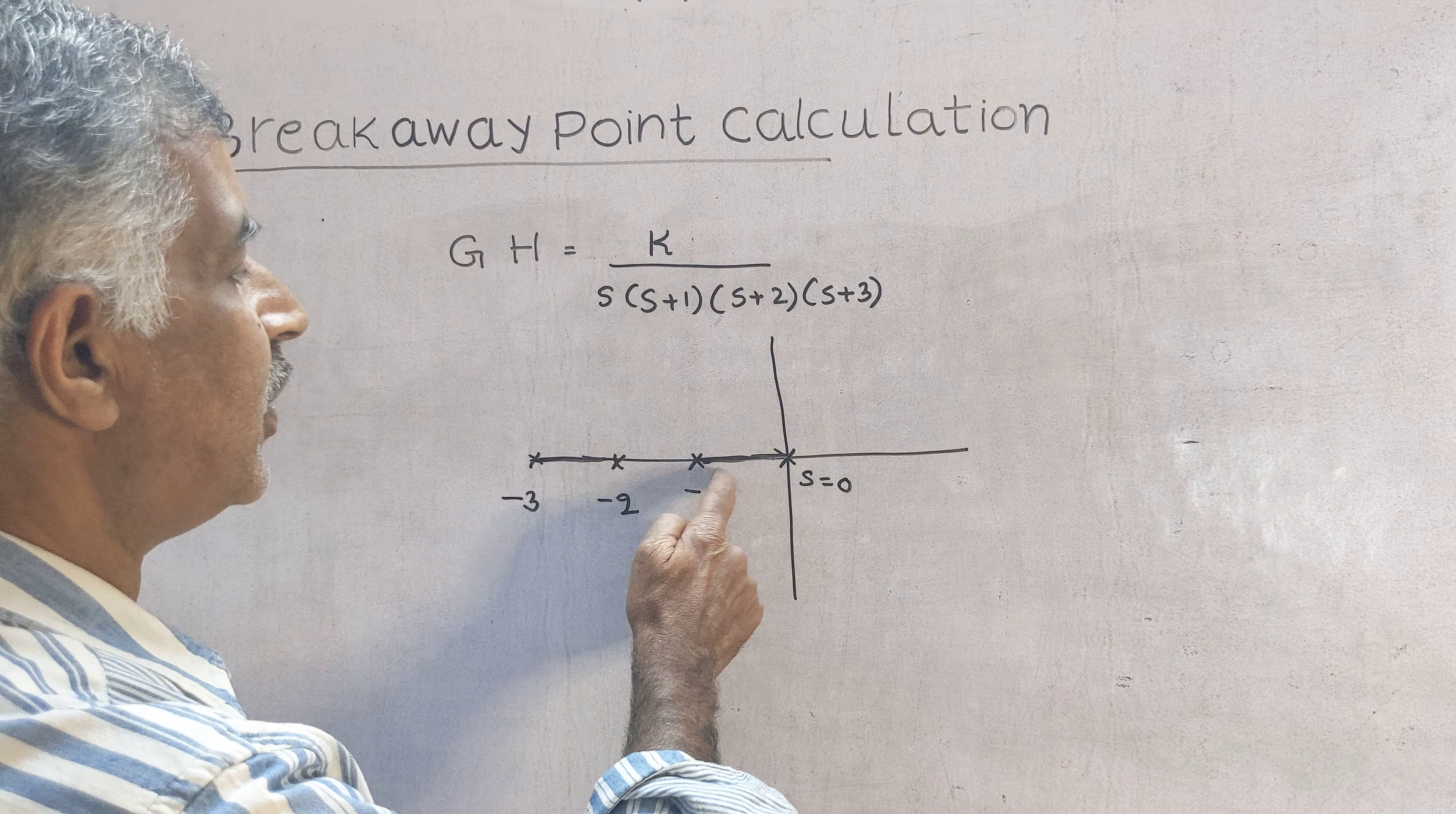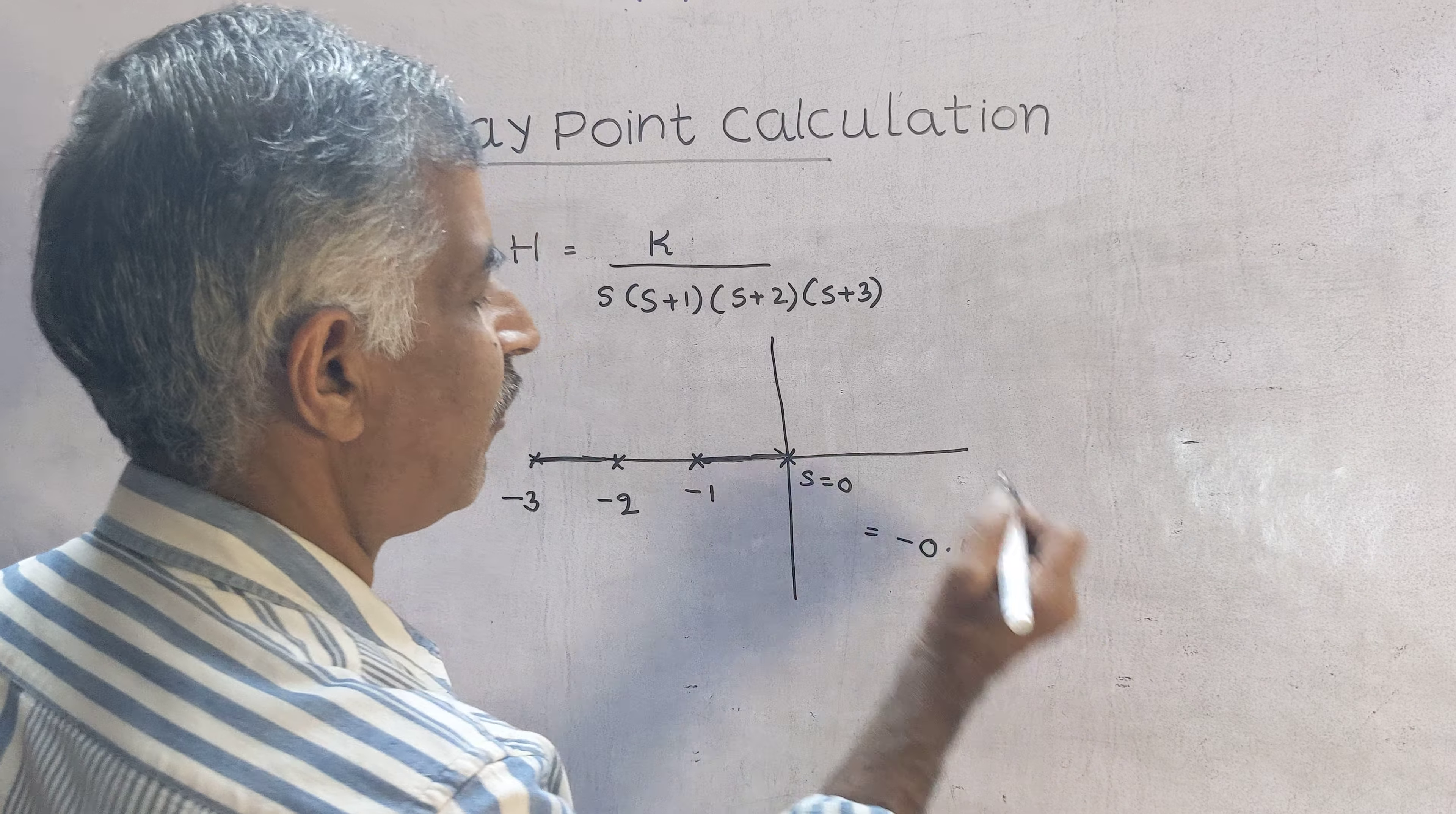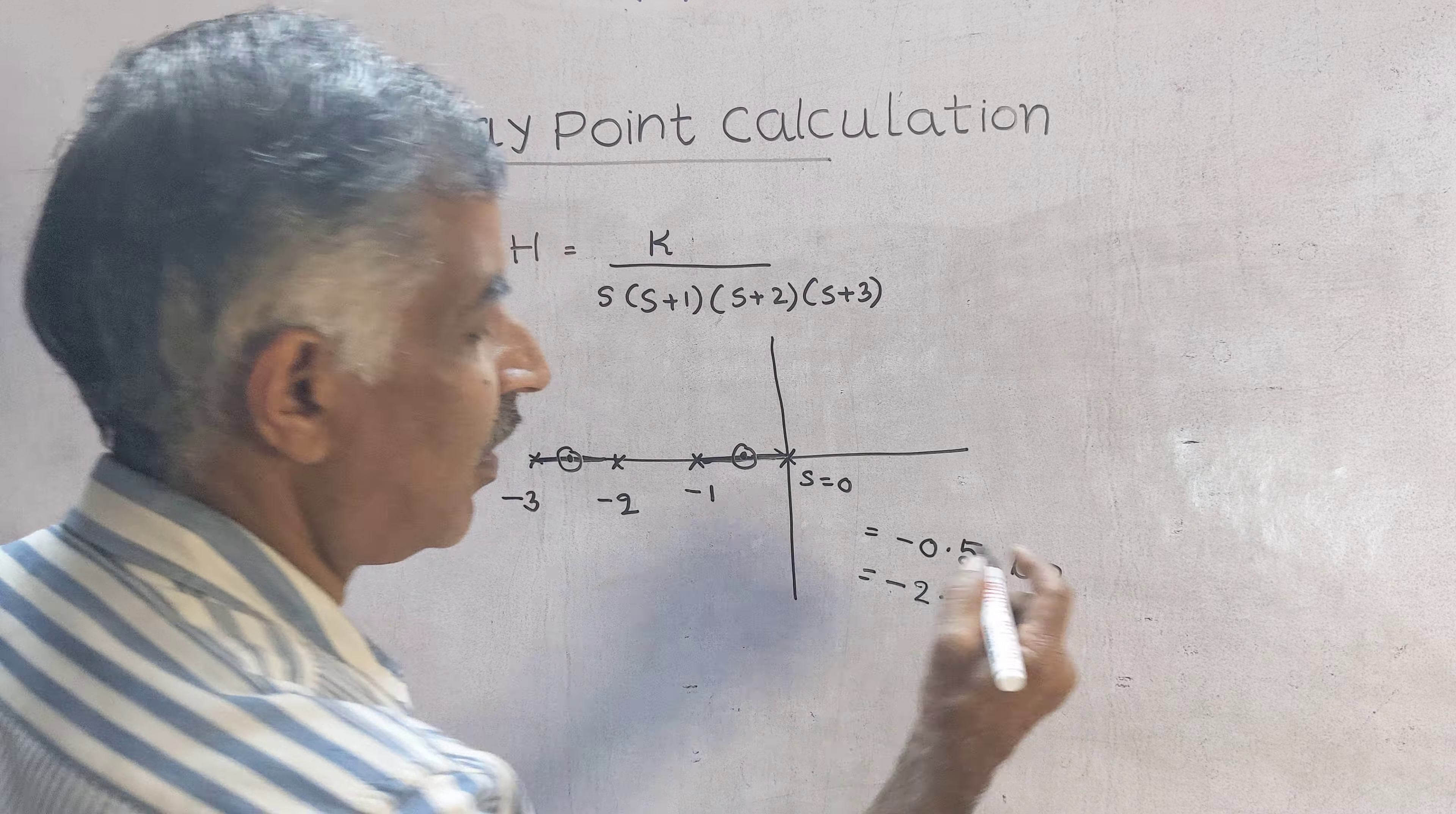Therefore between these two poles you mark one breakaway point. You follow this rule: take exactly the middle. So 0 minus 1, minus 0.5 is a breakaway point. Next between minus 2 and minus 3 the middle point is minus 2.5. So minus 2.5 is another breakaway point.